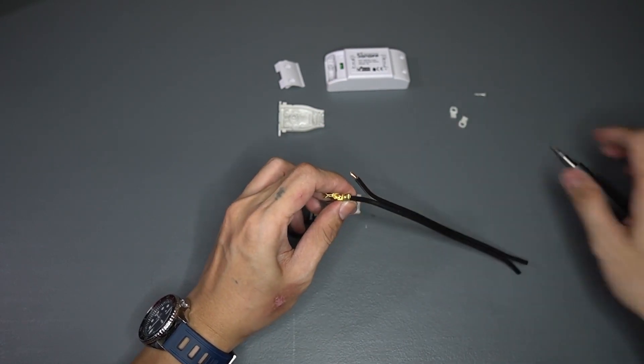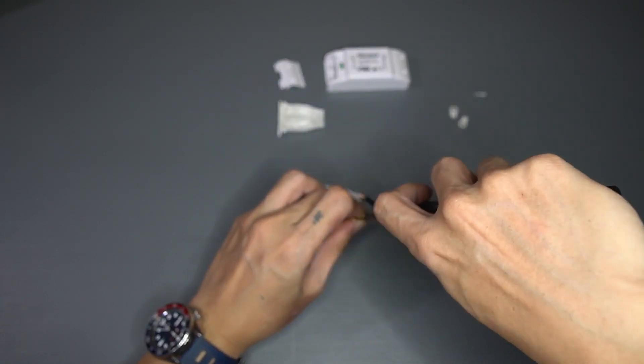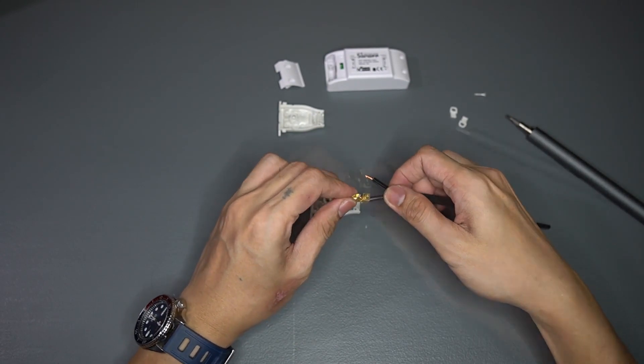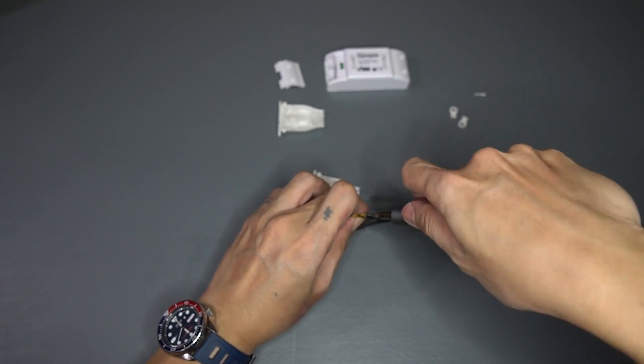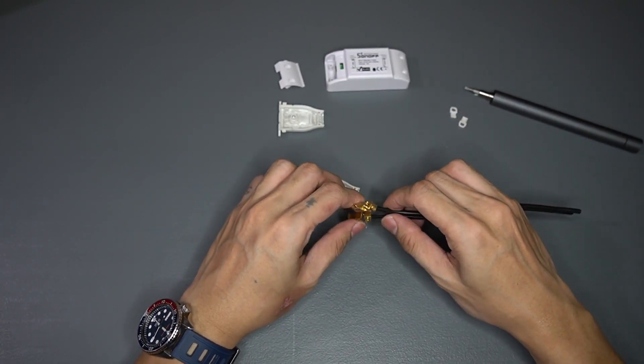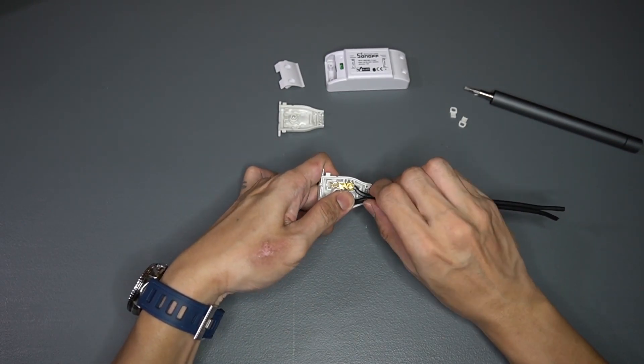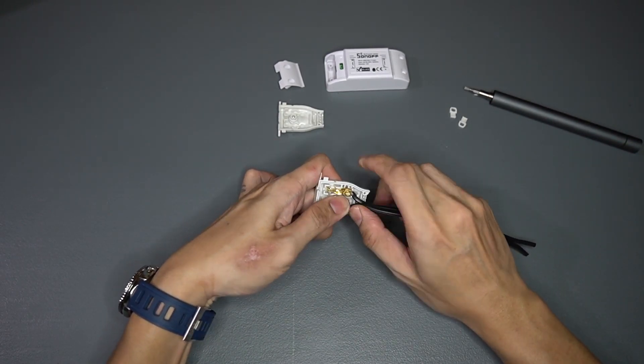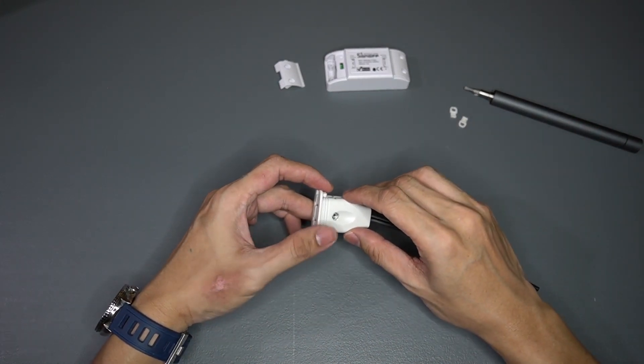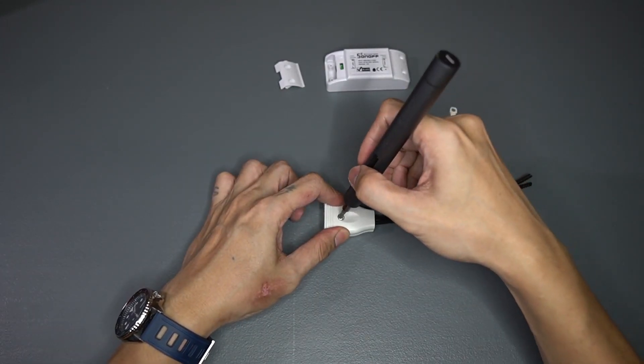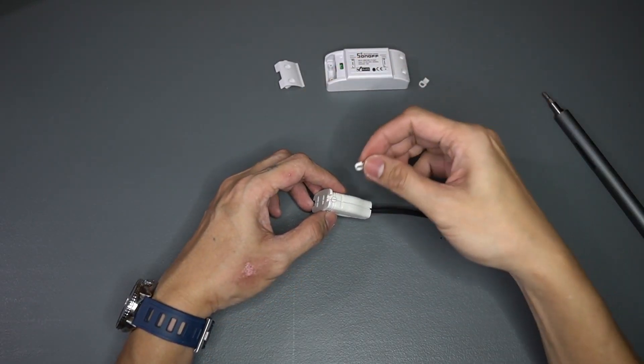Once the wire has been inserted, tighten the screw. Make sure that the wire is tightly connected to the terminal. Do the same procedure for the other terminal. Insert the terminals back to the plastic housing. Be sure to check all your connections and that wires do not cross with the other terminal. Return the other half of the plastic housing and tighten the screw. Fix the plastic clips back to the plug.